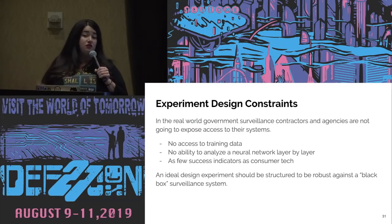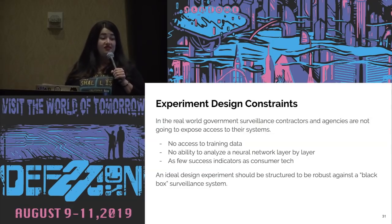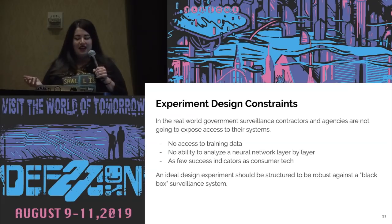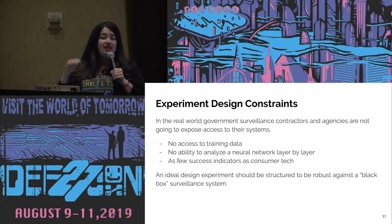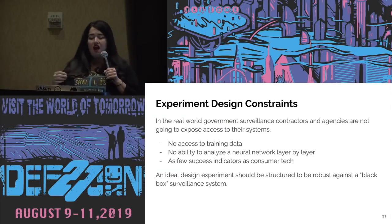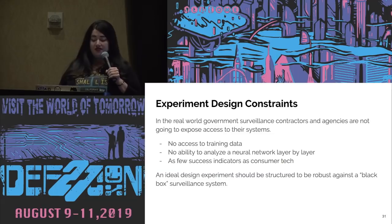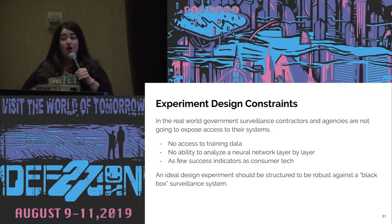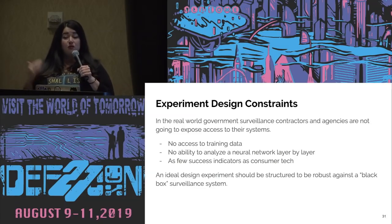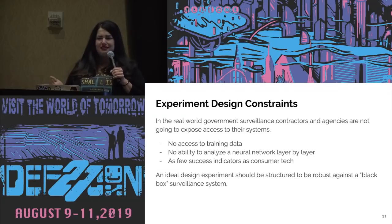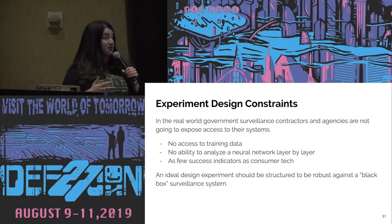This is important because in the real world, with government surveillance systems, I can't look under the hood. I usually won't get access to training data sets, and I can't peel apart the neural network layer by layer. An ideal design experiment should be structured to be robust against those black-box systems. Commercial applications give us a similar effect — and often commercially sold applications used by state agencies have training data sets that are not statistically different from public data sets used by open systems.